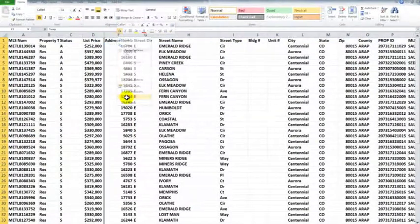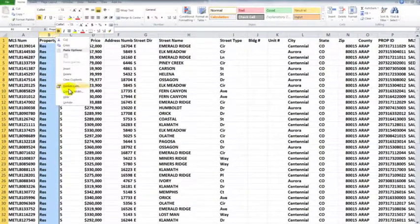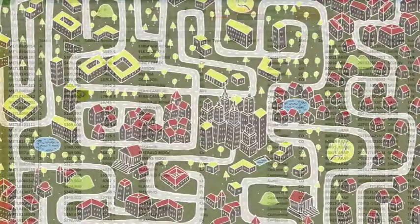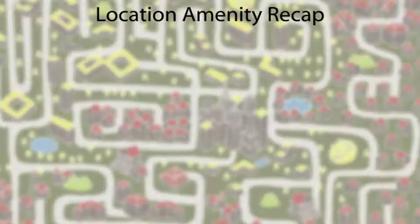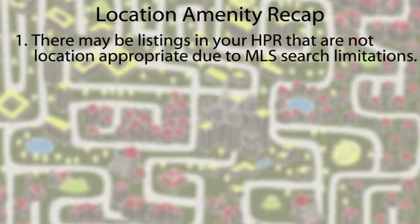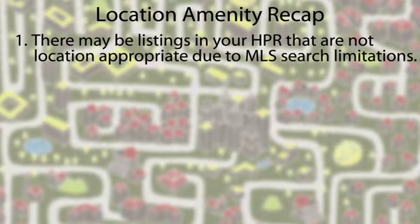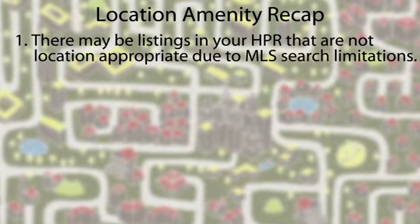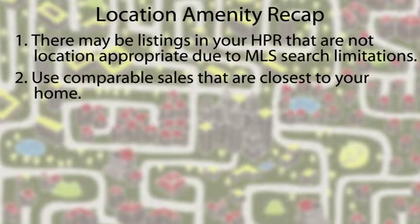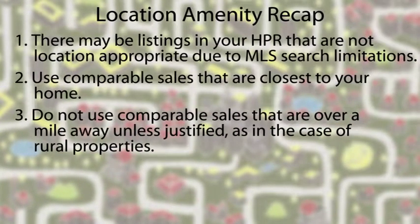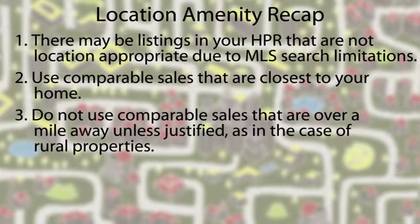In our part two video, we cover the first step in determining market value, and that's to generate a shortlist using Microsoft Excel. I'll teach you how to use Excel to filter the sold data based on your home's primary amenities. I'll review each of the primary amenities along with general standards of practice. You'll get plenty of practice with five actual examples.